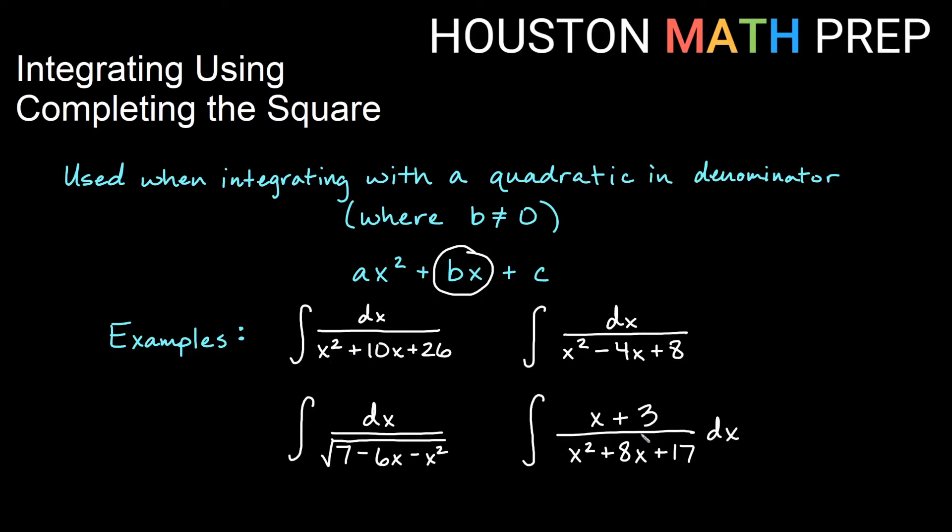So each of these you can see the examples we're going to do in this video. We have a quadratic, it has an x term, so b is not zero. We even have one that's inside of a square root here, a little bit different, so let's work through these examples together.